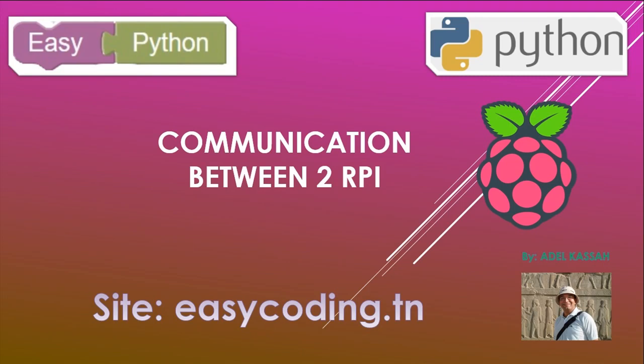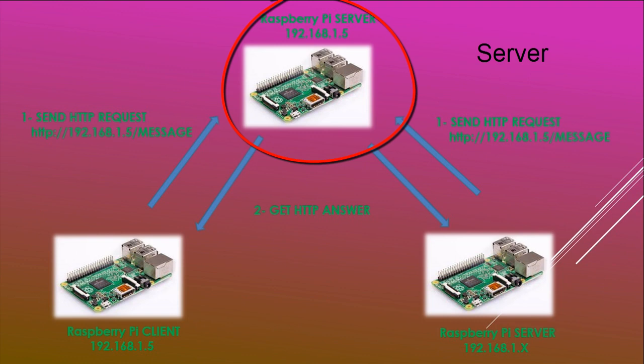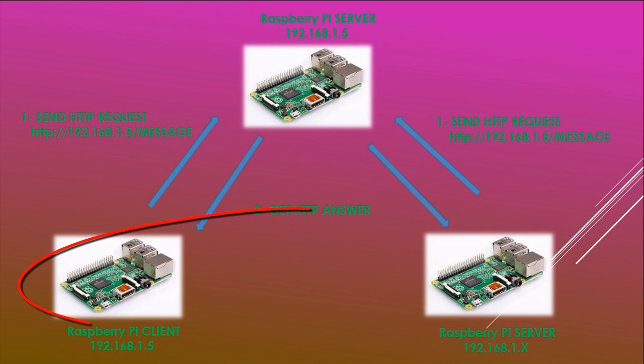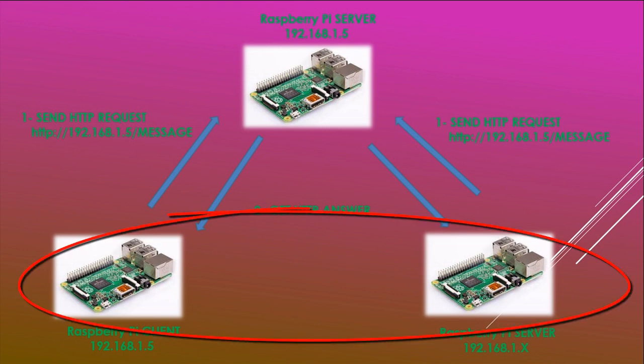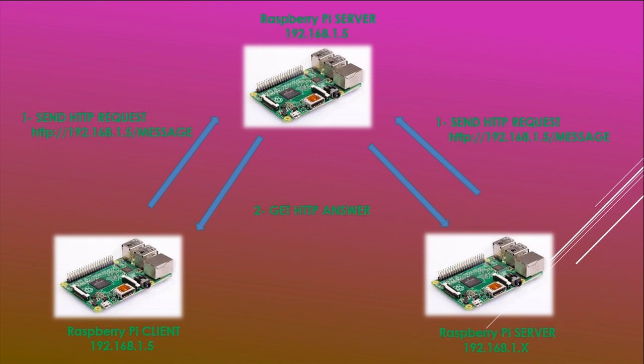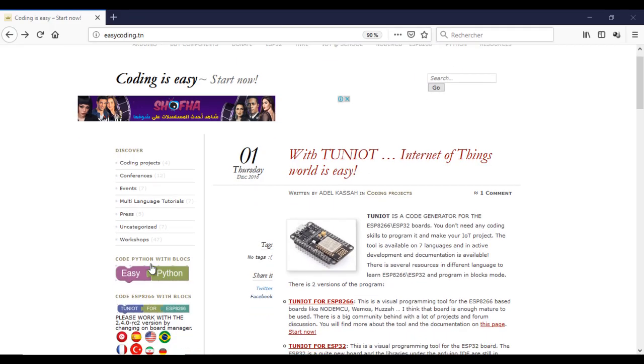Welcome to this new video of the list dedicated to the programming of the Raspberry Pi in an easy way. You will find the link of the list in the description. In this video we will see how to make a communication between two Raspberry Pis. There are several ways to do that — we will use REST communication, which means that one board will act as a server waiting for incoming HTTP requests. The second one will act as a client and will send the HTTP request. Usually these HTTP requests will carry sensor data.